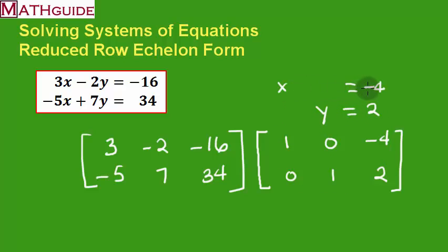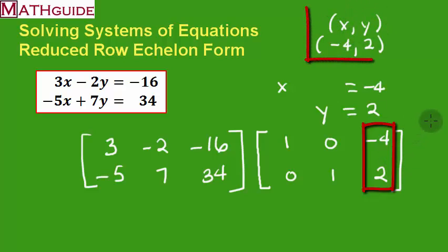What most people do is they just grab the last column, and that tells you the answer right there: x is negative 4, and y is 2. That's basically how you use the calculator. I do understand that every calculator works slightly differently. They're all a little bit different, but that's basically how you do it using a calculator, which is extremely easy. Make sure you go back to mathguide.com. Check out our other videos and our instructional videos and our quizzes. Take care.